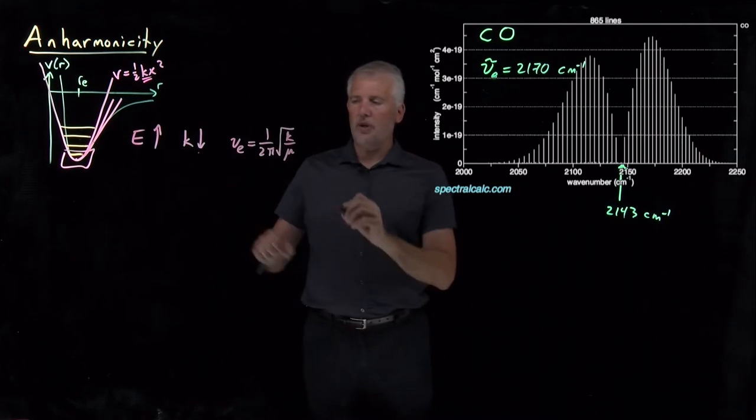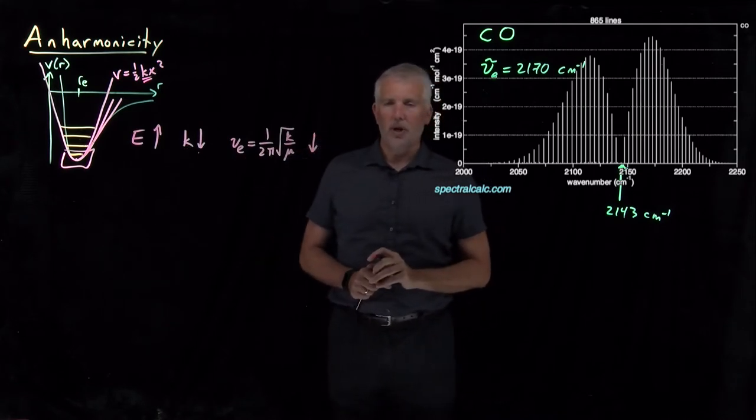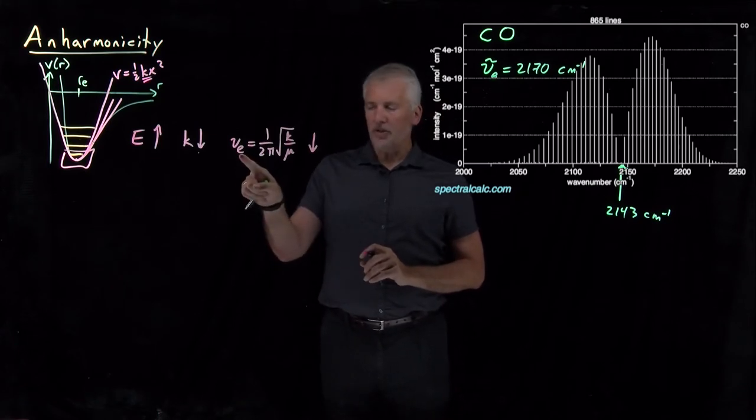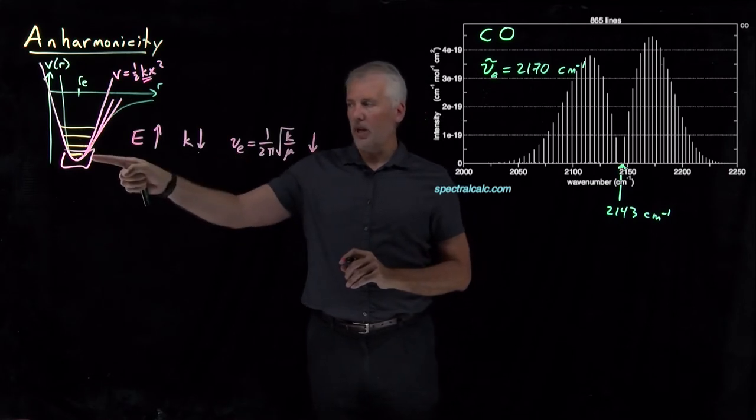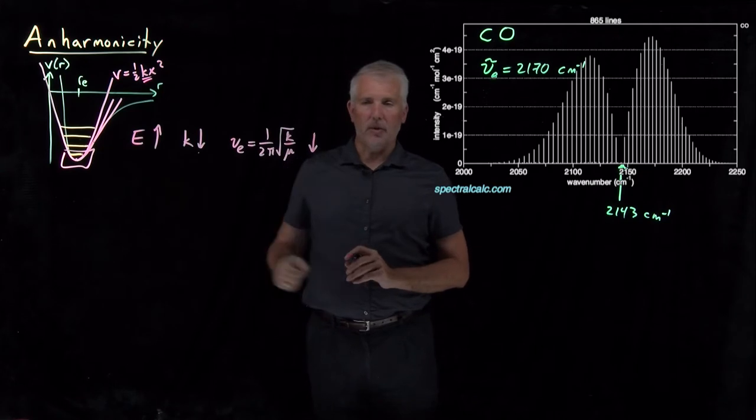So as k is dropping, that vibrational frequency would be dropping as well. So actually our harmonic oscillator prediction for the vibrational frequency is going to be off by a little bit, and it's going to be off by more for the upper energy levels than the lower energy levels.